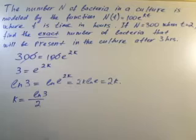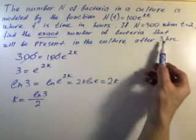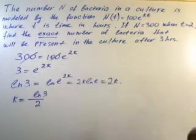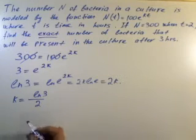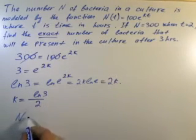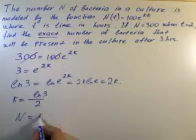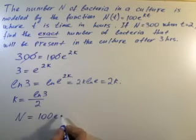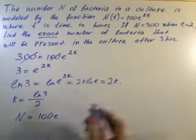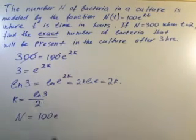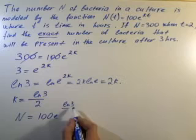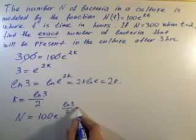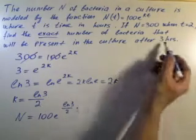And then after that we just need to put our three hours into the formula to find the number of bacteria. N equals 100e. We know our k equals natural log of 3 over 2 times 3 hours.